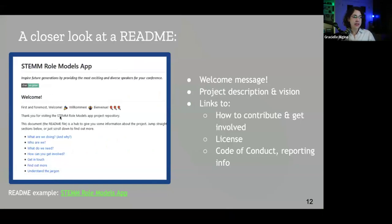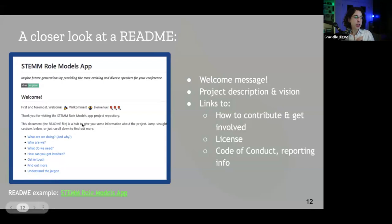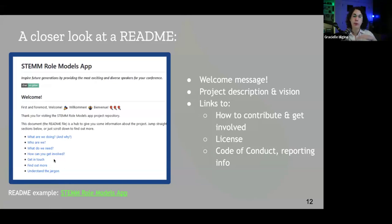Let's take a look at the README on GitHub. This is an example of a project. On GitHub, a README will show up on the landing page of your project — it's going to be the first thing that people will see. Here you see there's a welcome message with emojis and visuals, a small project description with a short sentence summarizing what the project is about. There are links to all the sections in the README and links to how people can get involved, code of conduct, license, and everything that is important for that project.